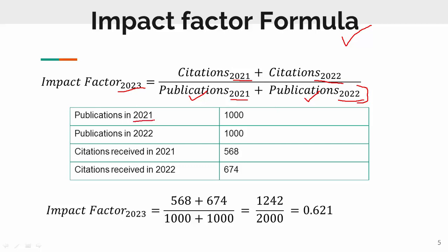For example, a journal published 1,000 articles in 2021 and 1,000 articles in 2022. In 2021 those articles received 568 citations, and in 2022 they received 674 citations. The impact factor is calculated as (568 + 674) divided by (1000 + 1000), giving a final impact factor of 0.621.